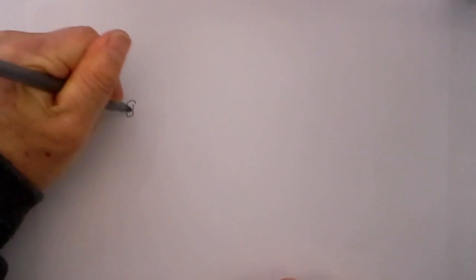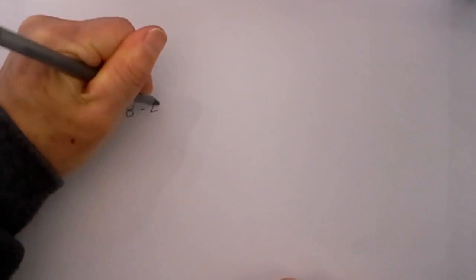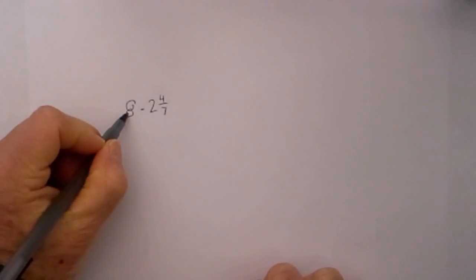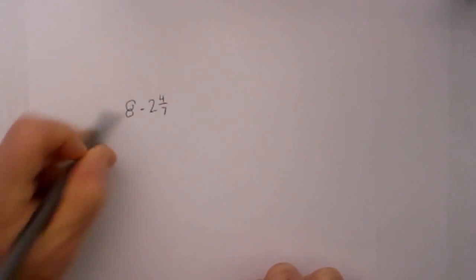What if you have one like this: you have 8 minus 2 and 4/7. How do we subtract this? We have a whole number and a mixed fraction. So here is my shortcut.